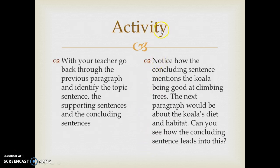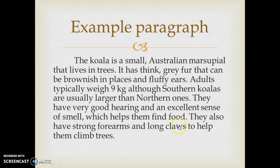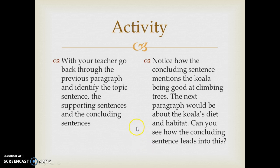Notice how the concluding sentence mentions the koala being good at climbing trees. In a typical report about an animal, the next paragraph might be about the koala's diet and habitat. You can see how the concluding sentence might lead on to the next topic — we've talked about physical features and then we're moving on to climbing trees, which leads into diet and habitat.